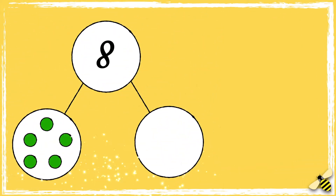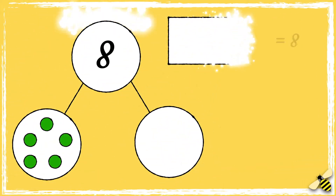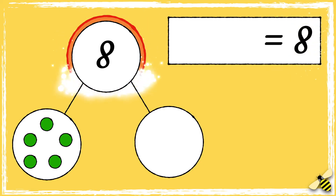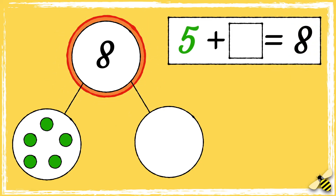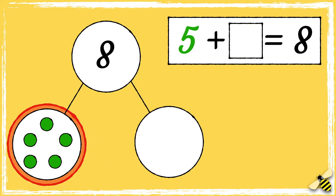Here is another part-whole model. We know that eight is the whole but we don't have all the parts. We can work out the missing part by counting on from five until we get to eight.